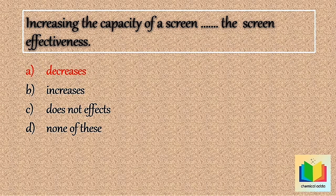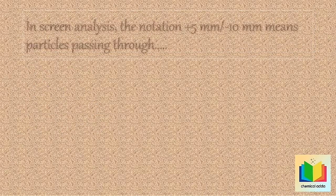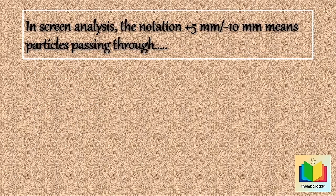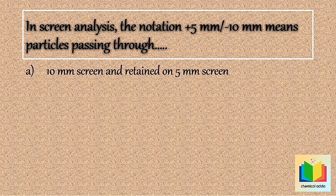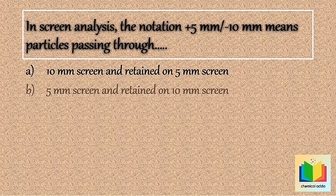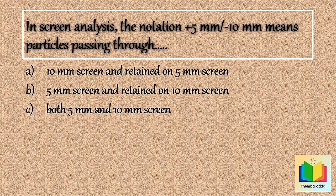Next question: In screen analysis, the notation +5mm / -10mm means — particles passing through: Option A: 10mm screen and retained on 5mm screen. Option B: 5mm screen and retained on 10mm screen. Option C: Both 5mm and 10mm screen. Option D: Neither 5mm nor 10mm screen.